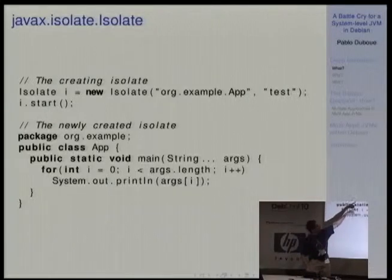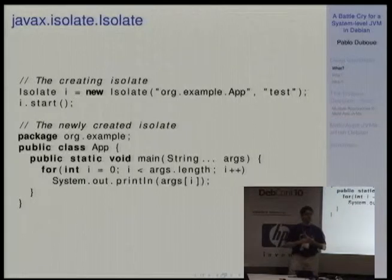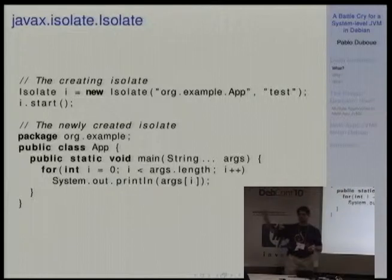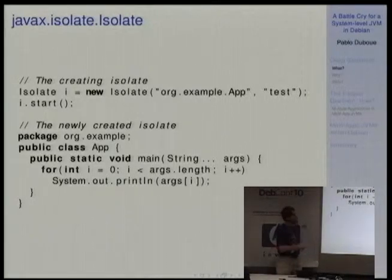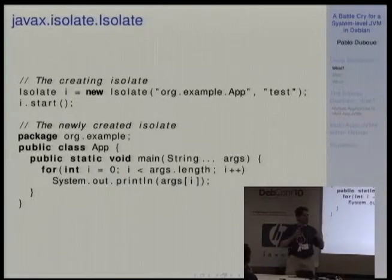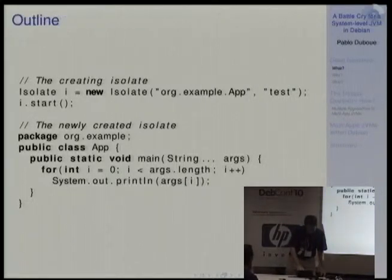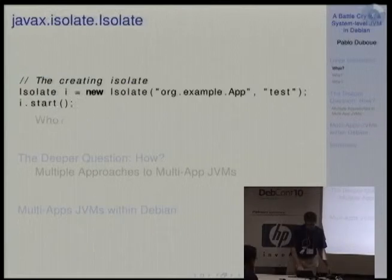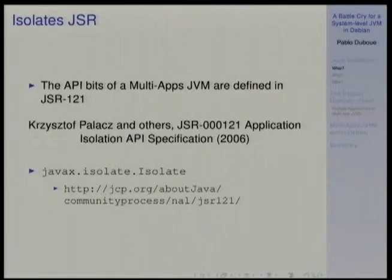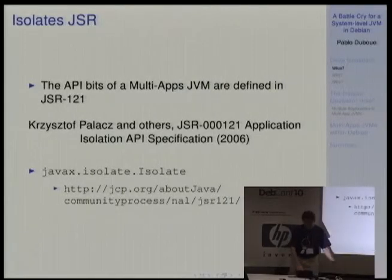With JSR 121, you can say you want a new isolate that is going to run that application, and then you can actually start the isolate. These few lines of code are equivalent to doing a new process, launching an external process with the JVM. You can also specify the input stream and output stream, and there are things called links that let you communicate with these isolates. This has been around since 2006, when this technology was mature enough to make it into a JSR.